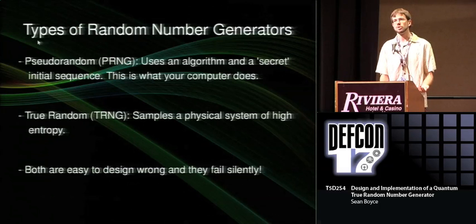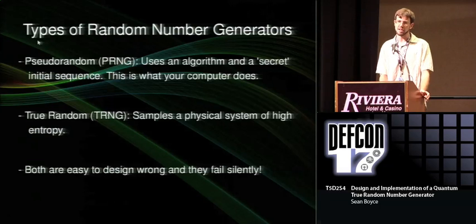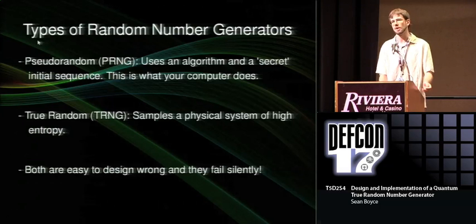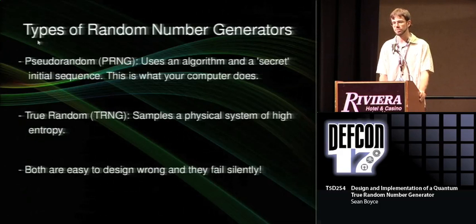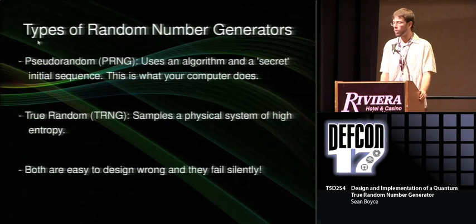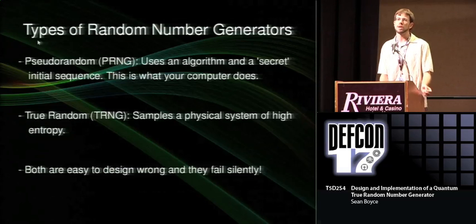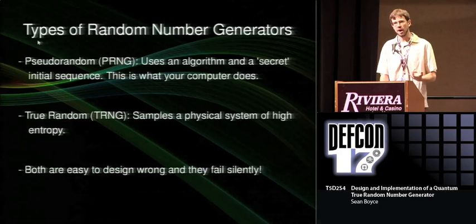If you wanted random numbers, you have two basic approaches. You can use a pseudo-random number generator, which uses an initial secret starting condition and an algorithm to generate a deterministic sequence of numbers — considered, for most applications, a good enough approximation to a random distribution. Or you can use a true random number generator. What they really do is sample random numbers by taking a chaotic physical system and measuring variation in that system to generate the numbers.